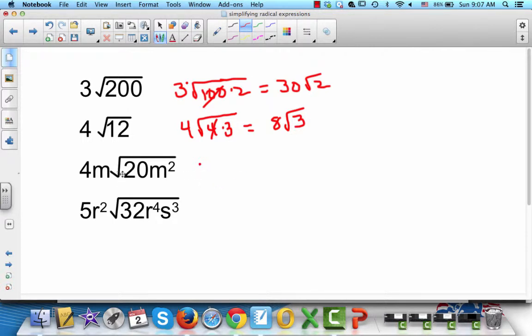Alright, now one with a variable on the outside also. So we go 4m times, oh that's radical, not parentheses.